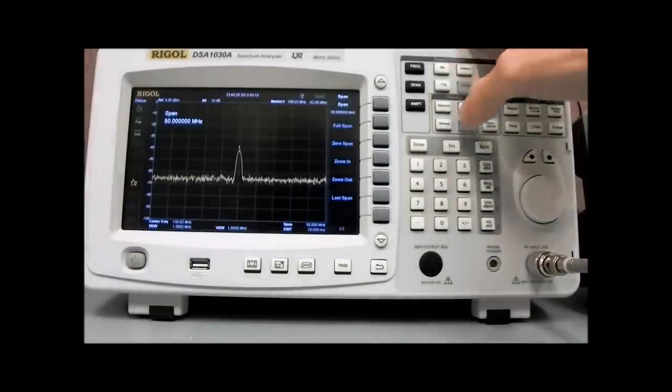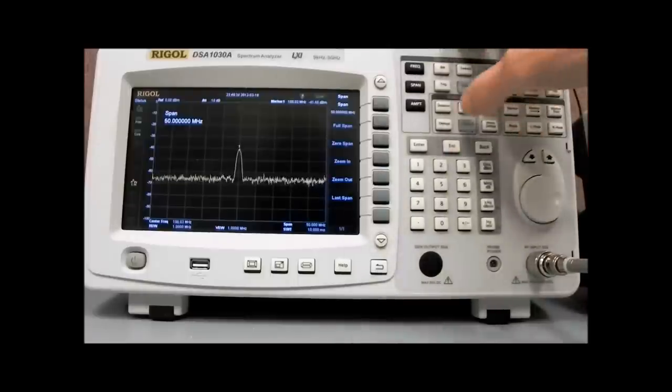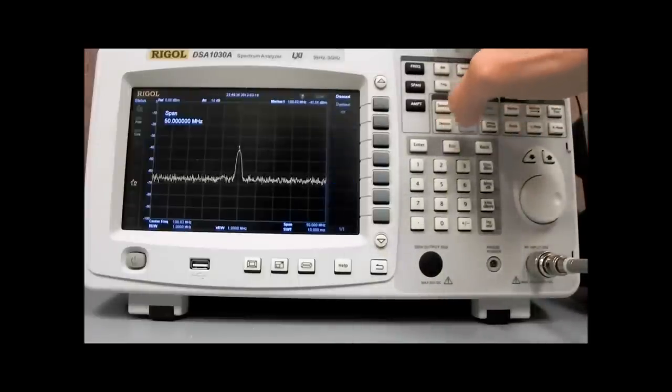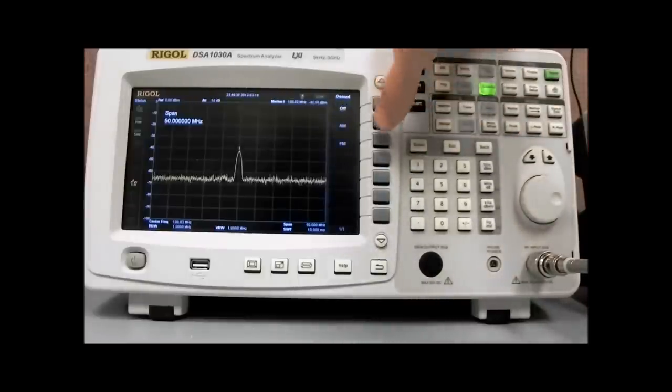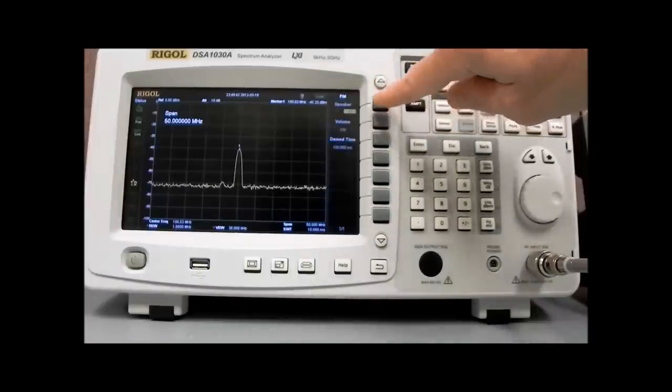And now what we can do is demodulate that input. So as a standard option with the DSA or standard feature, we can press demod, turn the demod on to FM. Then we want to set it up. We can turn the speaker on.